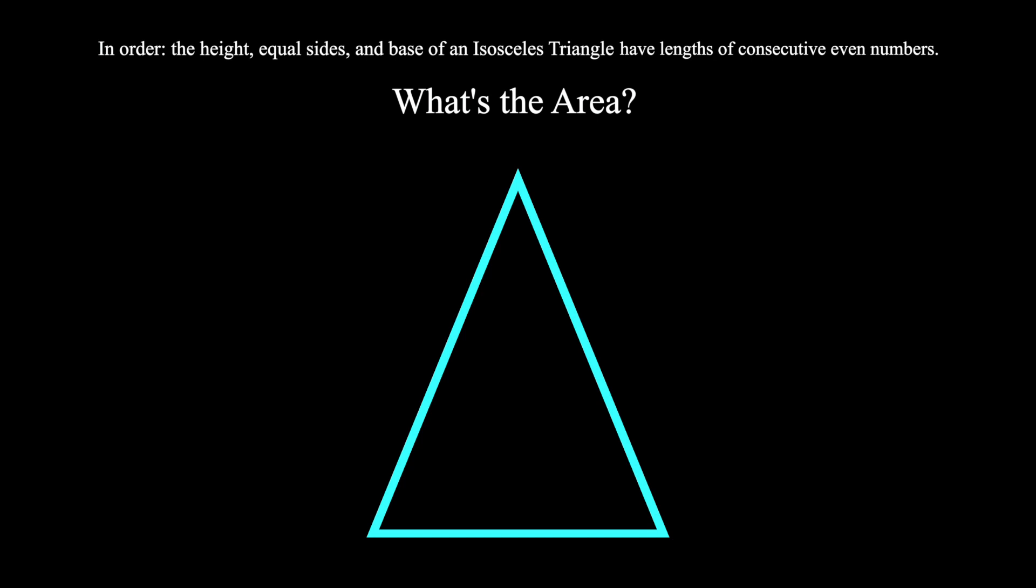We don't know any of these sides. Let's just say x is a natural number, so 2x is an even number and represents the height of this triangle.